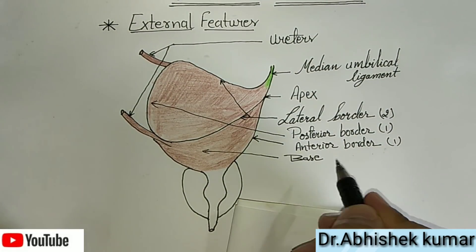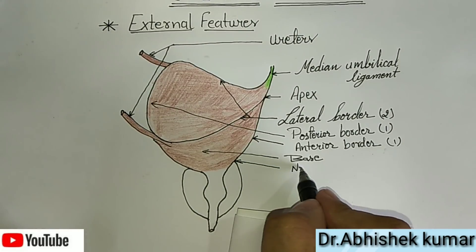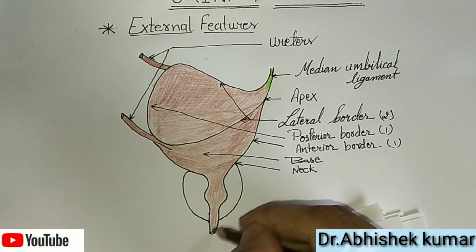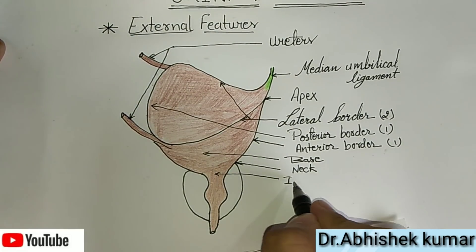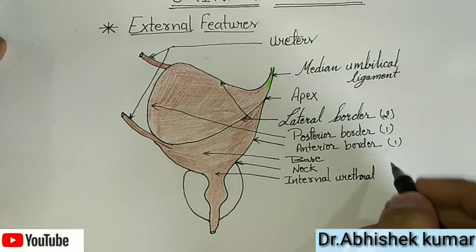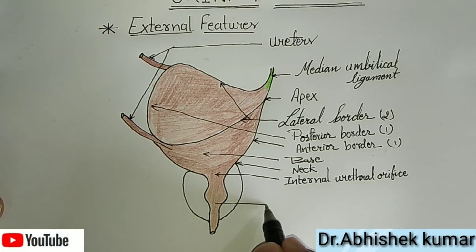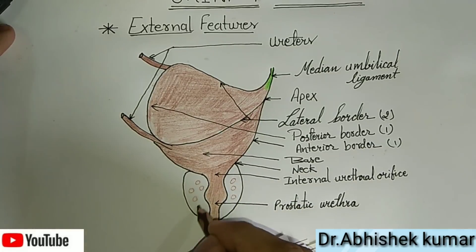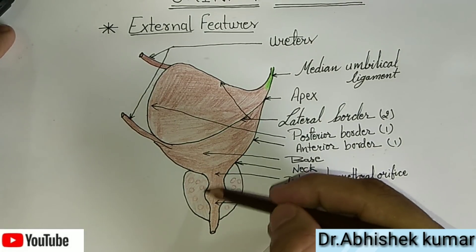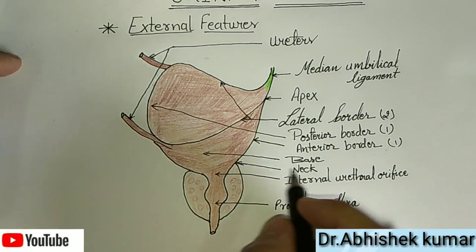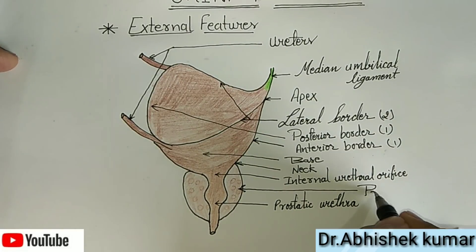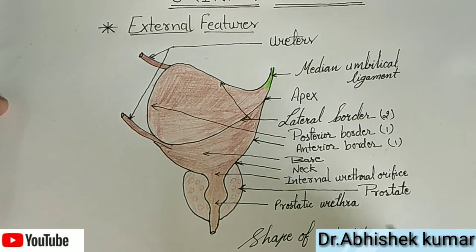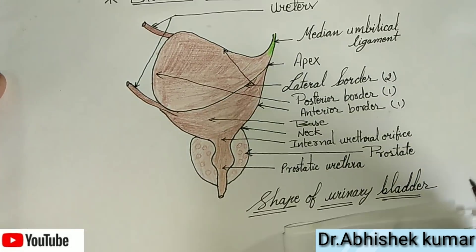This is the base of the bladder and this is the neck of the bladder. The neck is the lowest and most fixed part of the bladder; it lies three to four centimeters behind the lowest part of the pubic symphysis. This is the internal urethral orifice, this is the prostatic urethra, and this is the prostate gland. This completes the external features of the urinary bladder and its shape.